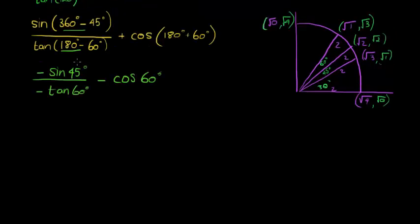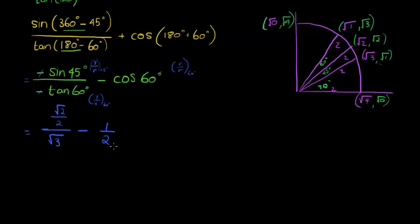First of all, sine of 45, sine is y over r for 45 degrees. Tan is y over x for 60 degrees, and cos is x over r for 60 degrees as well. So in the numerator, the negatives we can cancel. In the numerator we have sine of 45, sine is y over r, square root 2 over 2. Tan of 60 degrees, tan is y over x, square root 3 over square root 1, which just gives me square root 3. Minus cos of 60 degrees is x over r, square root 1 over 2, that's just 1 over 2.